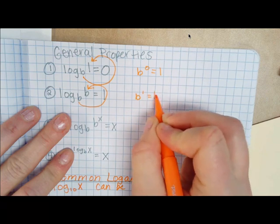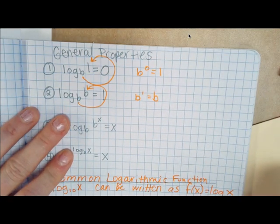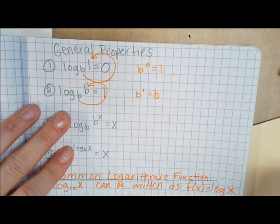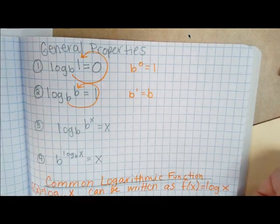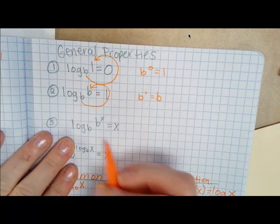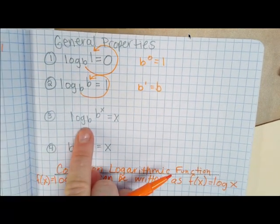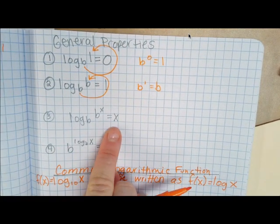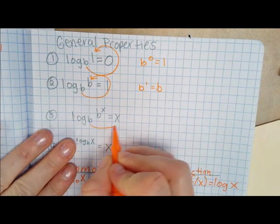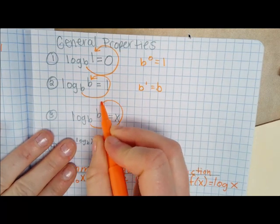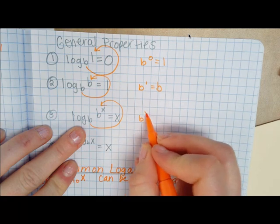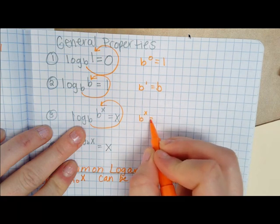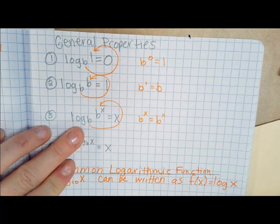The next property: log base B of B equals 1. Converting, we get B to the first power equals B — which is true, because anything to the first power is just itself. Then: log base B of B to the X equals X. Converting gives B raised to the X equals B to the X — same thing.